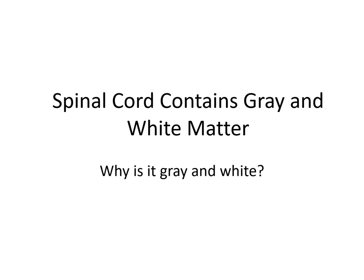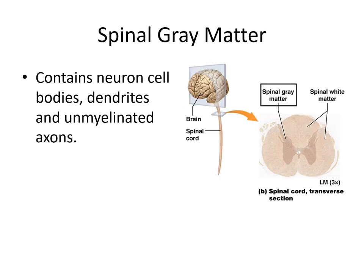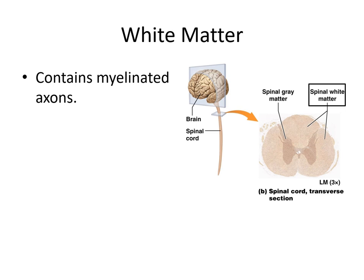The spinal cord contains both gray and white matter. The spinal gray matter contains the cell bodies, dendrites, and unmyelinated axons — it kind of looks like a little butterfly. The white matter is composed of myelinated axons and surrounds the gray matter. So in the spinal cord, we have the white matter surrounding the centrally located gray matter.